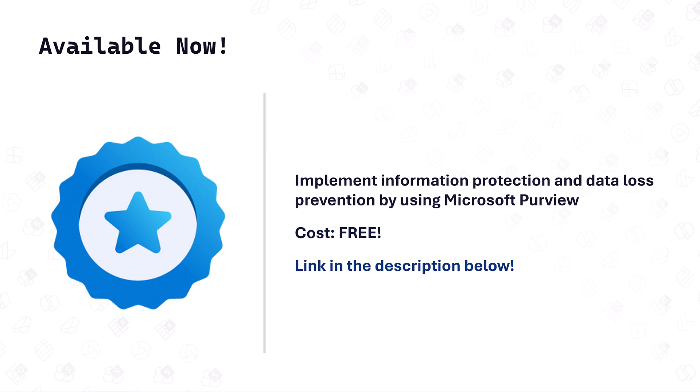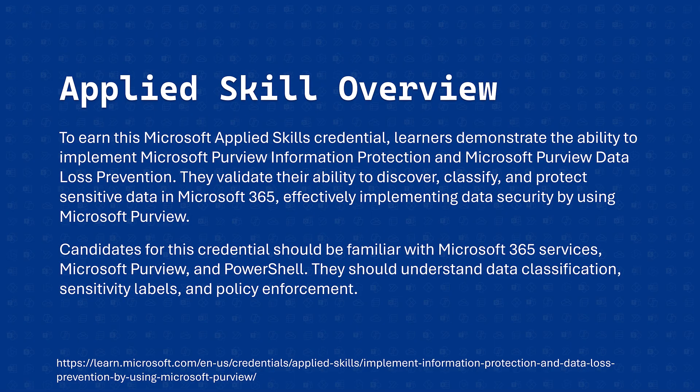I added the link in the description below, but let's take just a few minutes to cover what the applied skill is about and what you need to know before you go take it, so we make sure that you pass it from the very first try. To earn this Microsoft applied skills credential, learners demonstrate the ability to implement Microsoft Purview information protection and Microsoft Purview data loss prevention. They validate their ability to discover, classify and protect sensitive data in Microsoft 365, effectively implementing data security using Microsoft Purview. Candidates should be familiar with Microsoft 365 services, Microsoft Purview and PowerShell, and should understand data classification, sensitivity labels and policy enforcement.